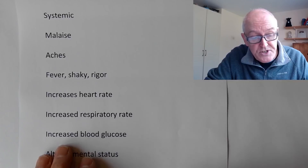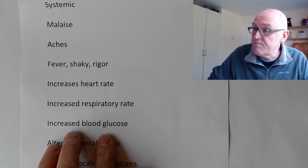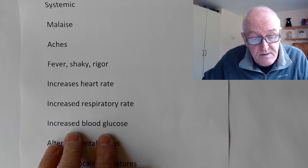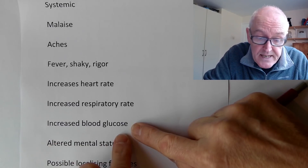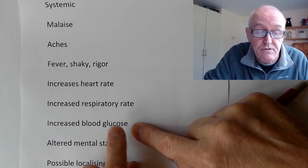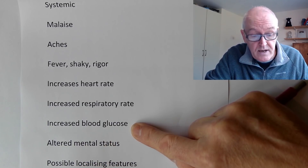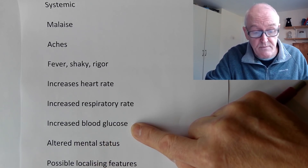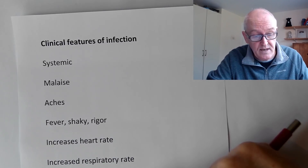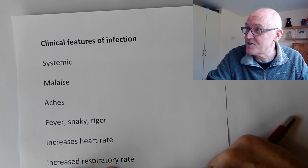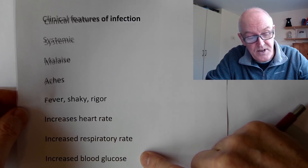If we test for blood sugar level, we'll find it will be increased because the body's alarm responses mean blood sugar levels increase. That makes perfect sense because blood glucose - the sugar in the blood - is essential for energy. So blood sugar is increased so we can make more energy, so we can have an increased respiratory rate, an increased heart rate, so we can generate the fever.